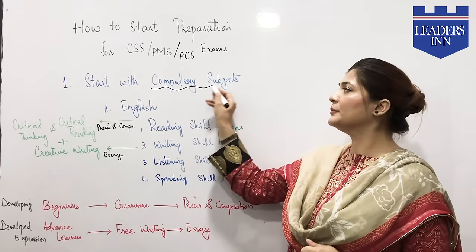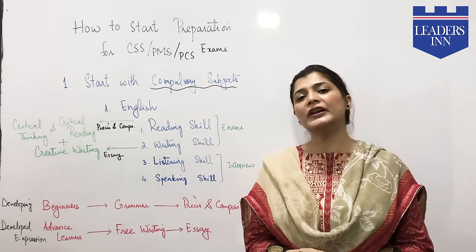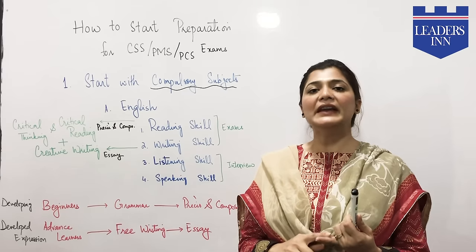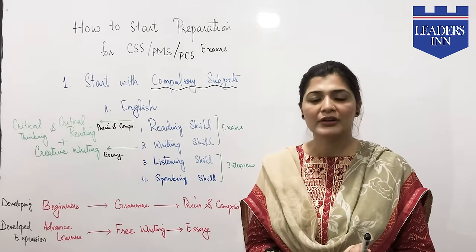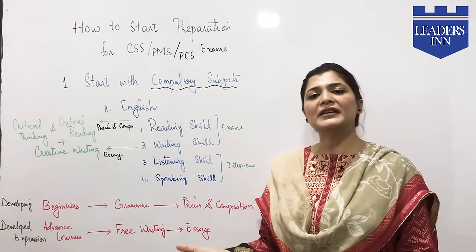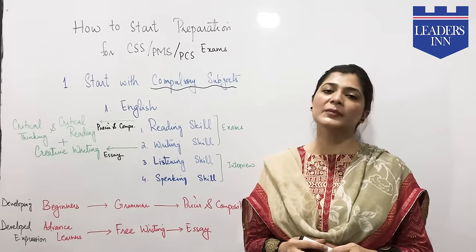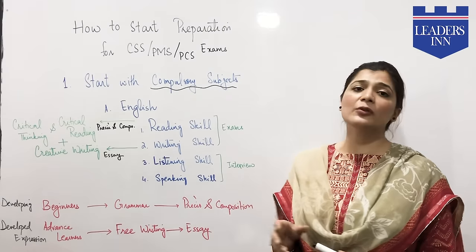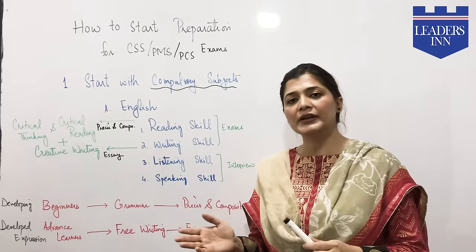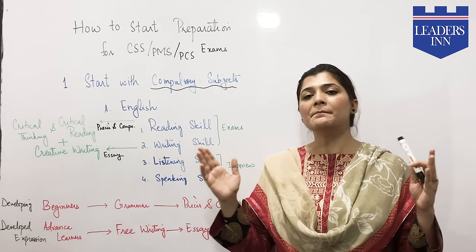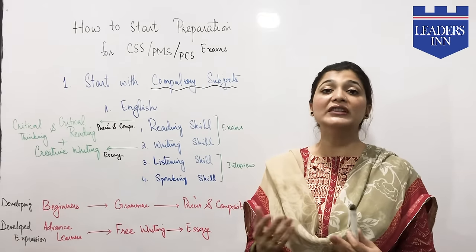Why compulsory subjects? These are subjects that you have already studied in BA, BS, and even at intermediate level — subjects like English, Islamiyat, and Pakistan Studies, which maps to Pakistan Affairs. Since you have studied these before, you will understand the subject quickly.